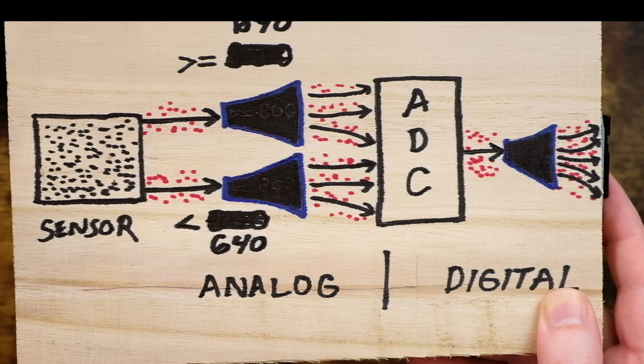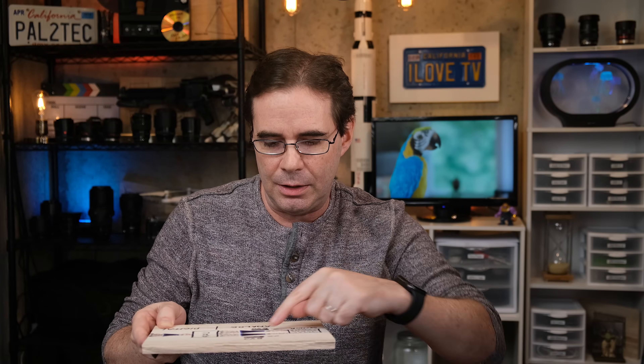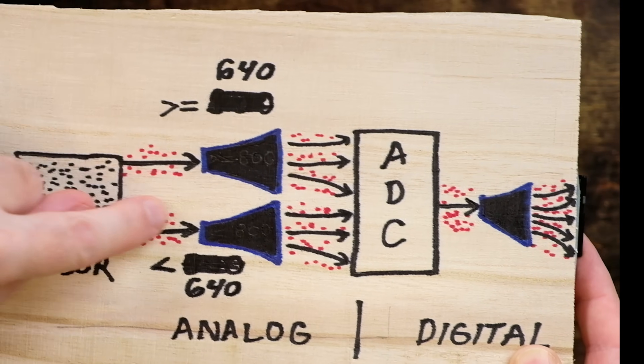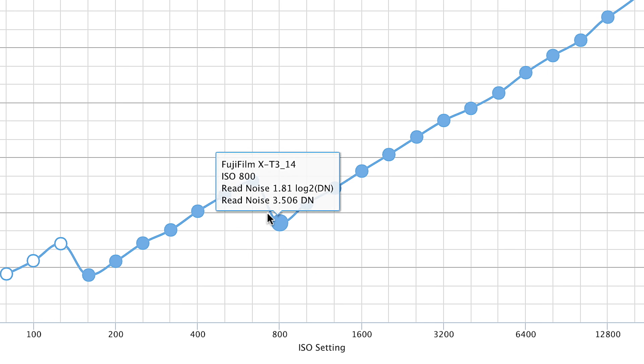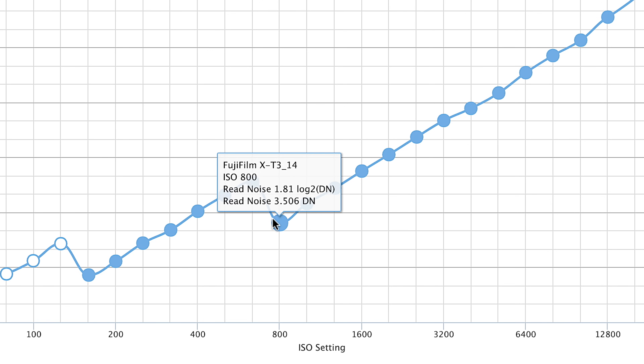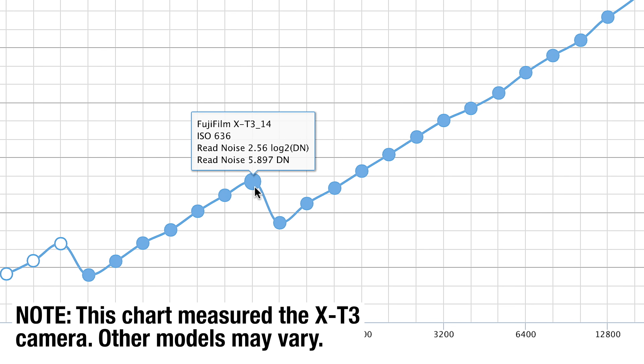Now, before it gets to the analog-to-digital converter, your ISO kicks in. Your camera actually has two different analog amplifiers to amplify the signal. Remember, ISO is nothing more than amplification of the signal. So the signal comes in, picks up a little noise, then hits the amplifiers. And here's the interesting thing — look at how there's a drop right here on the chart. When you get to ISO 640, it drops down — there's less noise — and then the noise continues back up. That's where a different amplifier kicks in.